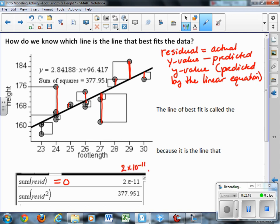This says 2 times 10 to the negative 11th, which is 0.00000000002. Your calculator just can't quite round it correctly, and so what this means on your calculator is that we're talking about zero. This is the number zero. So the residuals add up to zero.